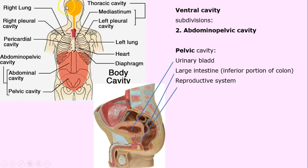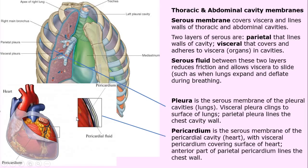Here's a nice review: we have the dorsal, spinal cord, pericardial, abdominal, and pelvic. Now for the thoracic and abdominal cavity membranes. What's really neat is the organs have their own membranes — usually a serous membrane that covers the viscera. 'Viscera' means organ. These membranes line the walls of the thoracic and abdominal cavities, and they allow our viscera to slide back and forth, especially when there's serous fluid between two layers of membrane.